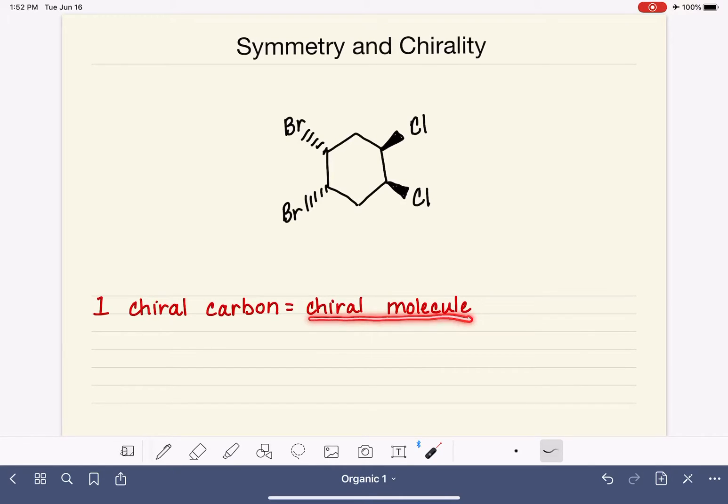If the molecule has two or more chiral carbons, then we can't say with confidence that the molecule is going to be chiral or not. It is going to be either chiral or achiral.